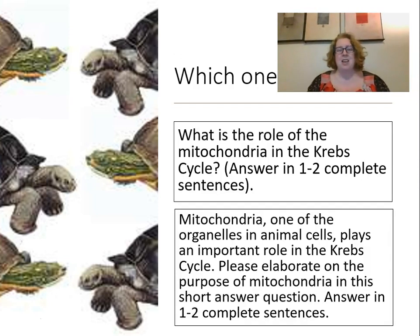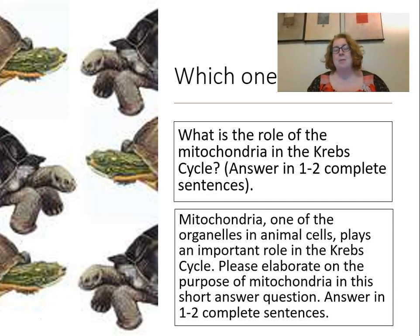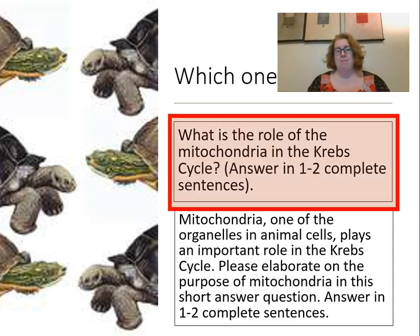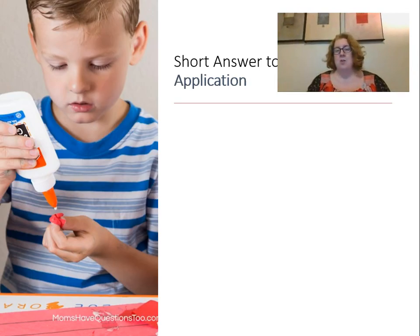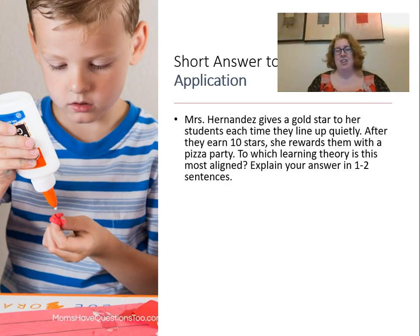Keep items at or below the grade level of students being assessed, unless measuring reading comprehension. For example: 'What is the role of mitochondria in the Krebs cycle? Answer in two complete sentences' is much clearer than a lengthy, complex version asking students to elaborate. The first version takes less time to read and comprehend while still asking the same thing.